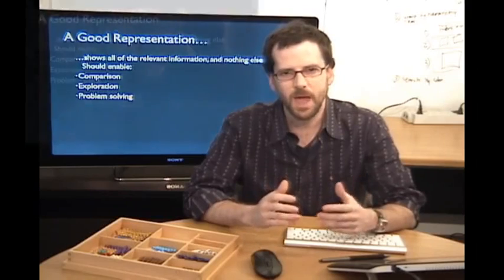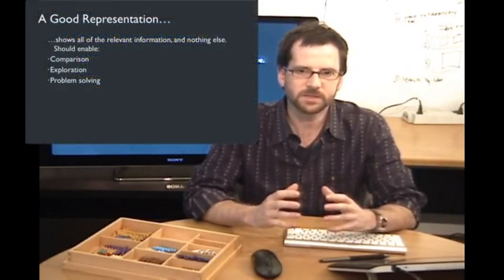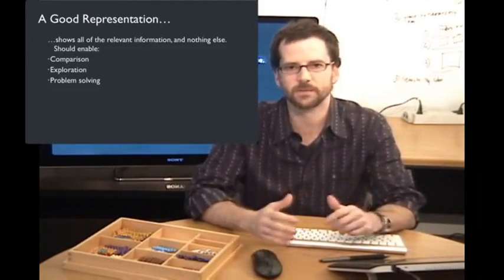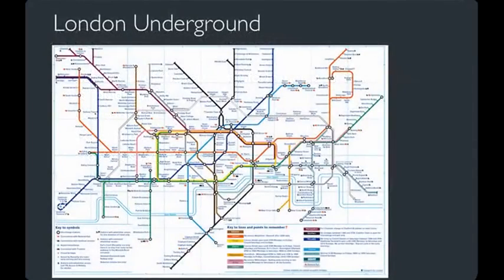So what makes a good representation? You should show the information that you need and nothing else. These representations should enable the kinds of tasks that users want to do — like comparison, exploration, and problem solving. If that seems too abstract or perhaps obvious, let's look at the example from the London Underground. This subway map was introduced about a century ago and was one of the very first maps to introduce a brand new idea in map design: abstracting the layout of tracks from the underlying physical geography.